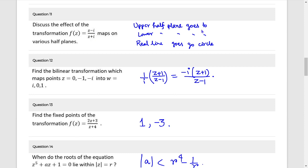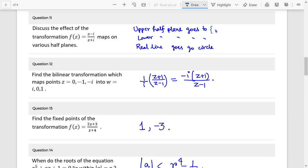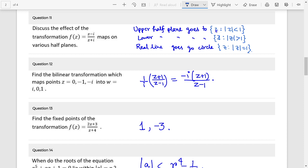E set of all z such that mod z is less than 1. And eta z such that mod z is greater than 1. And eta set of all z such that mod z equals to 1.